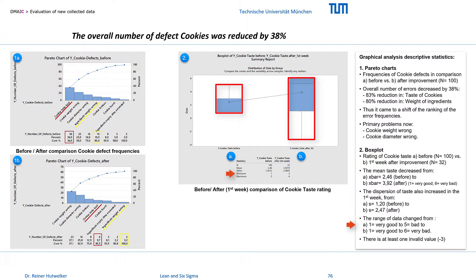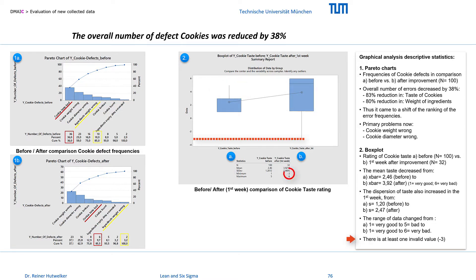Before the improvement the ratings scattered from 1 (equals very good) to 5 (bad). After the improvement the ratings ranged from 1 to 6 (equals very bad), and there is at least one invalid value.